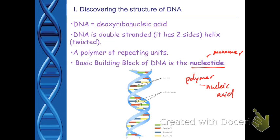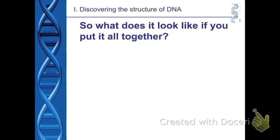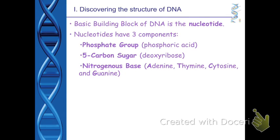DNA is the polymer — all these building blocks, these nucleotides, put together. The basic building block of DNA is the nucleotide. Nucleotides have three parts: a phosphate group, a five-carbon sugar, and a nitrogenous base. There are four types of nitrogenous bases: adenine, thymine, cytosine, and guanine.